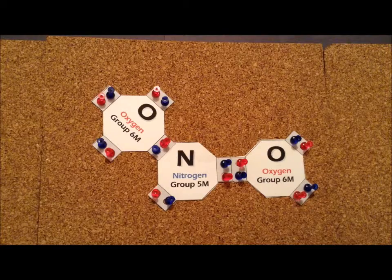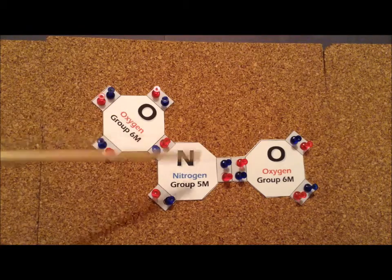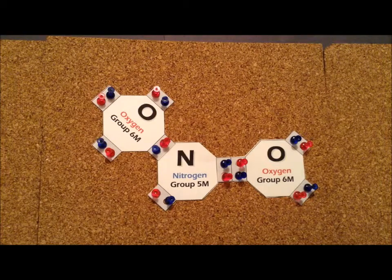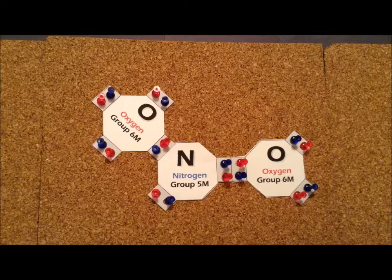So the true structure for nitrite ion is a resonant structure of the two different forms. The end result is that the actual structure has two identical nitrogen-oxygen bonds, each of which has a bond length that is approximately a one-and-a-half bond.